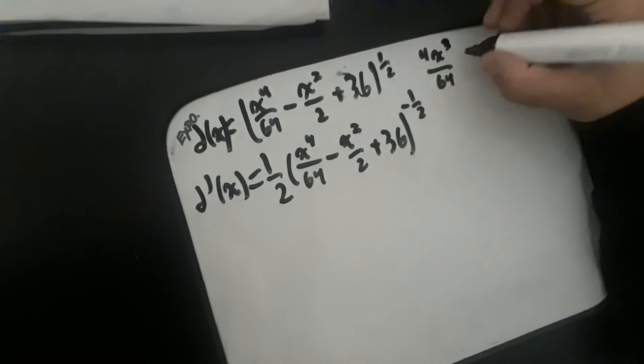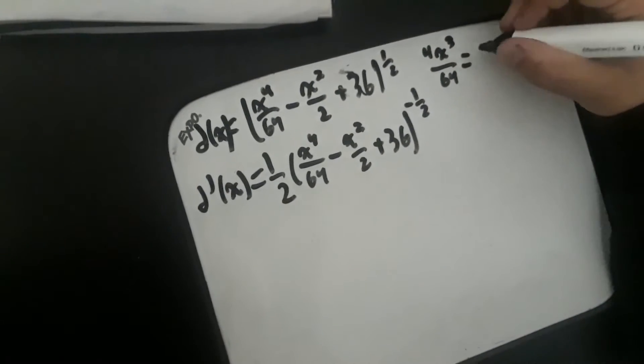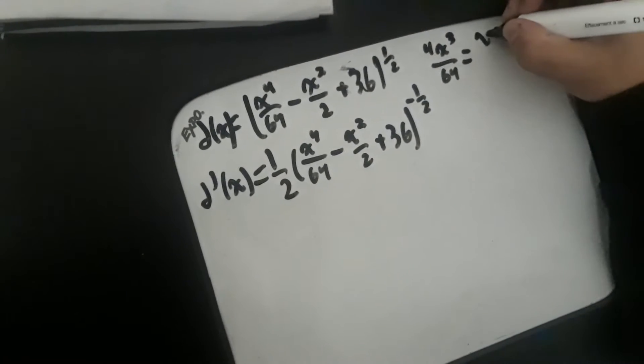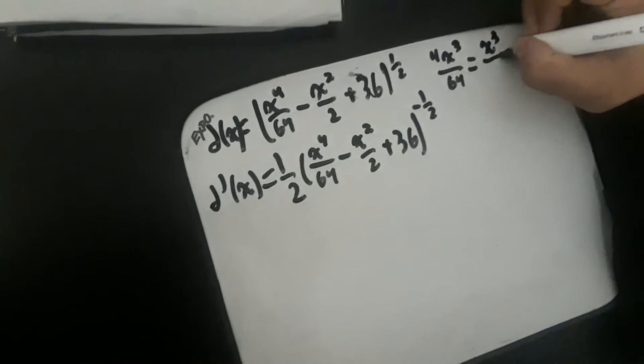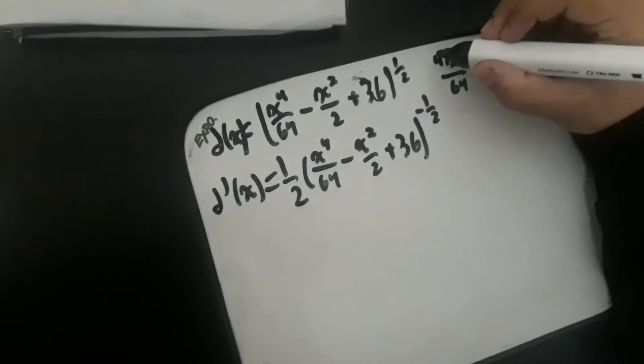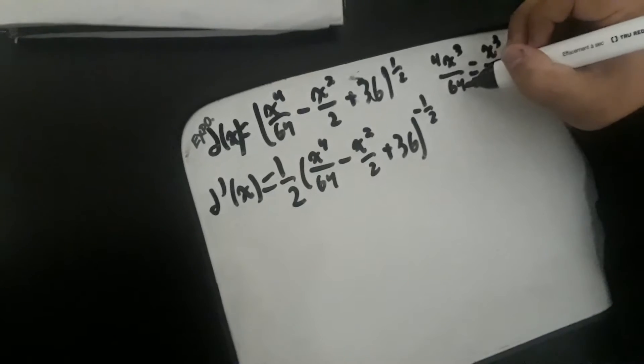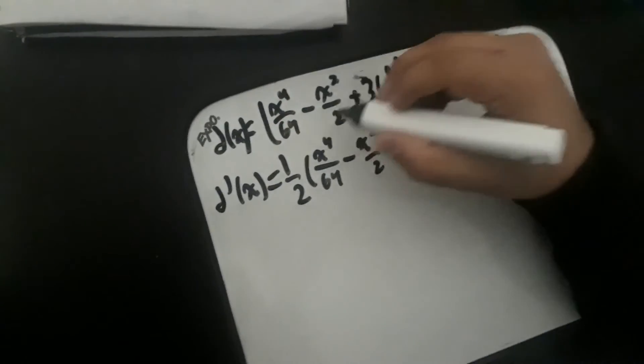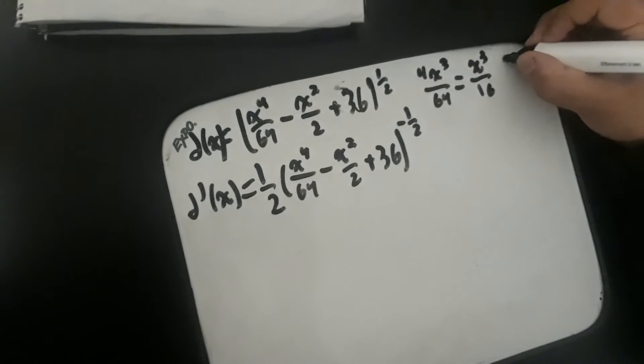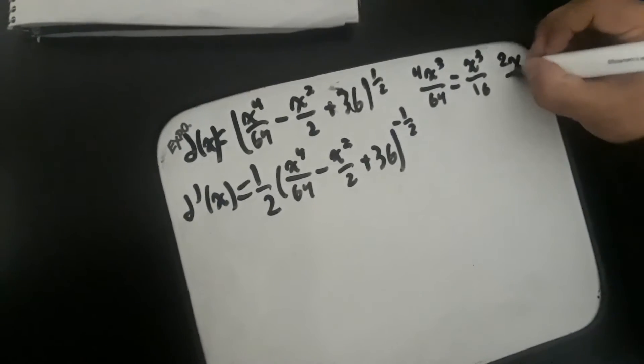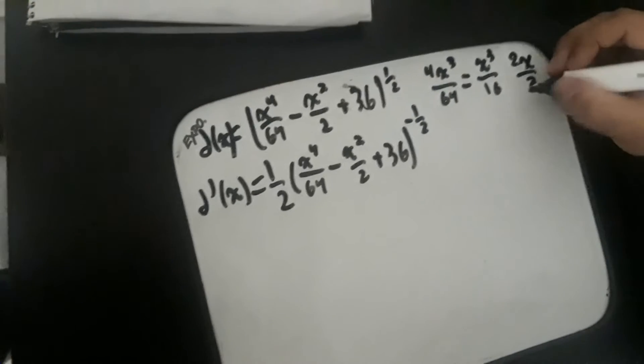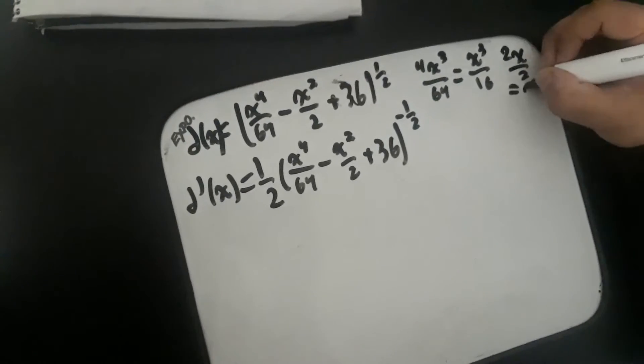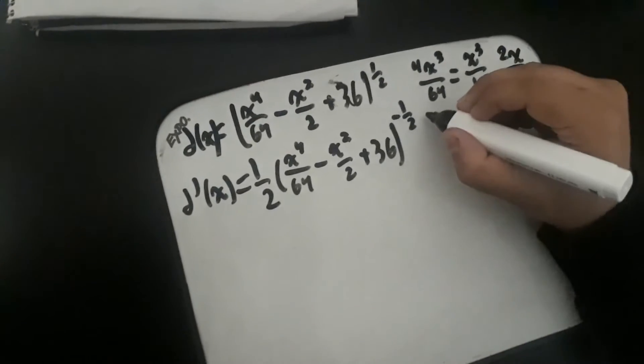And this would become 2x over 2, and the 2s would cancel out which just leaves x. So we can put that in here: x cubed over 16 minus x.